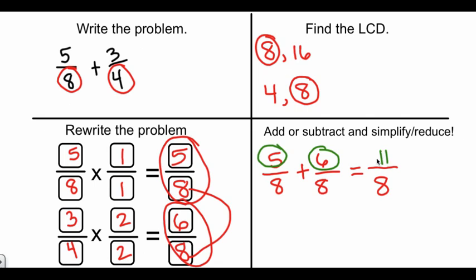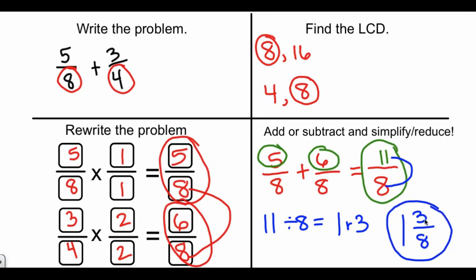Our fraction is 11/8. We're not done though, because it asks us to simplify or reduce. Right now, this is an improper fraction. We've learned in previous videos how to turn an improper fraction into a mixed number - it's simply a division problem. When we do 11 divided by 8, we find that 8 goes into 11 one time with a remainder of 3. To turn that into our mixed number, we have 1 whole with 3 left over, over 8, because our denominator never changes. Now we have our final answer: 1 3/8.